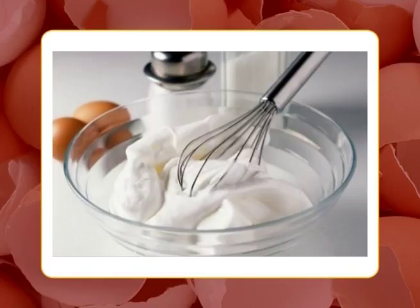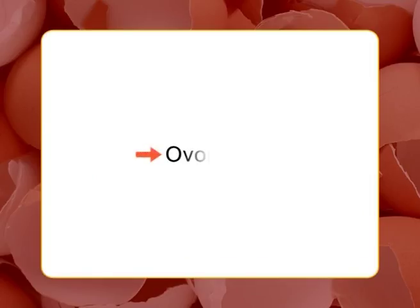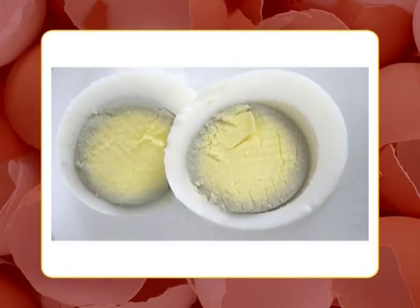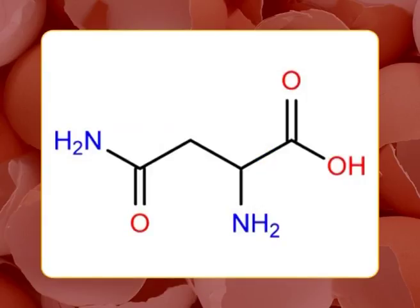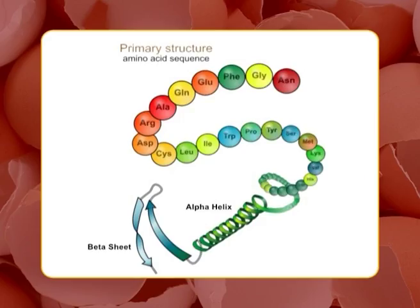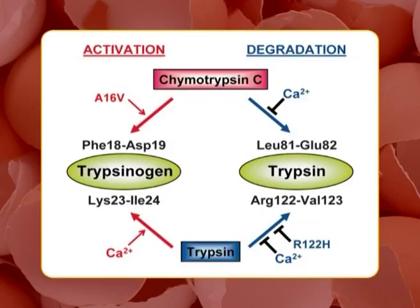The second protein is ovomucoid, a glycoprotein whose carbohydrate moiety consists of three oligosaccharide units bound to protein through asparagine residues. The protein has nine disulfide bonds, providing stability against heat coagulation. It can be isolated from supernatants of heat-coagulated albumin solutions and precipitated by ethanol or acetone. Ovomucoid inhibits bovine but not human trypsin activity.